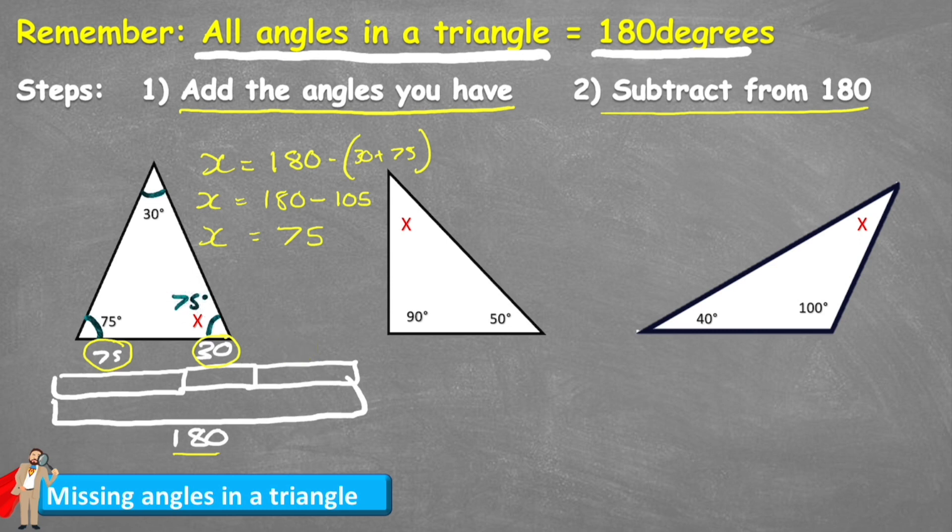So for this missing coordinate we should have 75 degrees. Now I can double check that by putting that into my bar model. We think 75 and now I can check whether this all equals 180 when I add it together. 75 plus 30 is 105 plus my 75 is 180. Perfect.